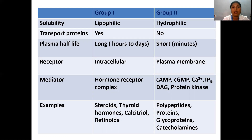The receptors for Group 1 lipid-soluble hormones are intracellularly located, whereas Group 2 hormones have receptors located on the plasma membrane. The mediators for Group 1 include the hormone-receptor complex itself, while Group 2 uses mediators such as cyclic AMP, cyclic GMP, calcium, inositol triphosphate, diacylglycerol, and protein kinases. Examples of Group 1 hormones include steroids, thyroid hormones, calcitriol, and retinoids. Group 2 includes polypeptide hormones, proteins, glycoproteins, and catecholamines.